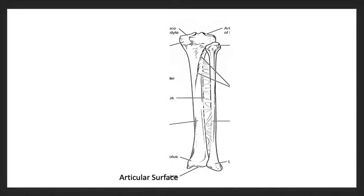Continuing with the lower limb, we have the articular surface, medial malleolus, tibia, interosseous membrane, and lastly the medial condyle.